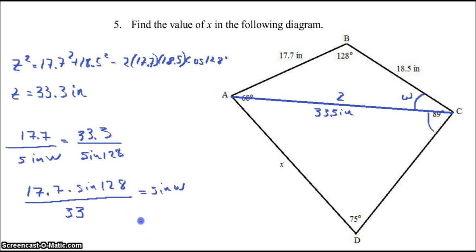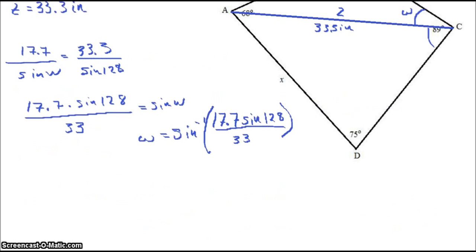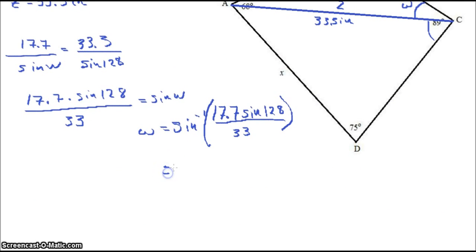Then we'll take the inverse cosine of that and we'll get, I'm sorry, the inverse sine of all of this and we'll have W. 25 degrees for W.